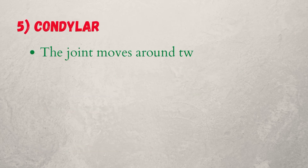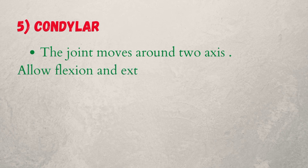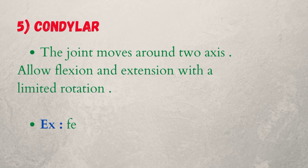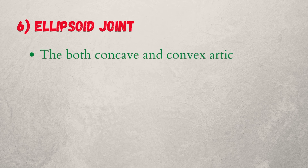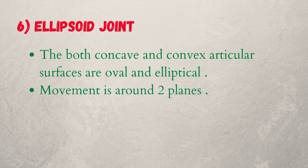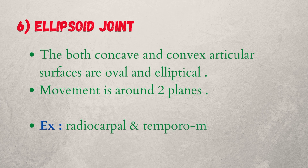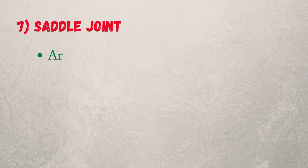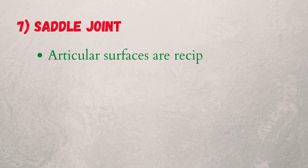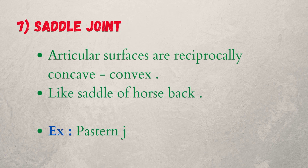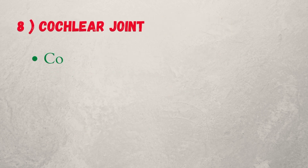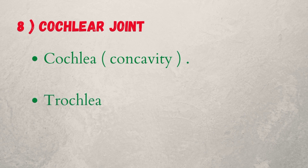Five, condylar joint — the joint moves around two axes, allowing flexion and extension with limited rotation. Example: femorotibial joint. Six, ellipsoid joint — both concave and convex articular surfaces are oval and elliptical; movement is around two planes. Example: radiocarpal and temporomandibular joint. Seven, saddle joint — articular surfaces are reciprocally concave and convex, like a saddle on horseback. Example: pastern joint. Eight, cochlear joint — characterized by concavity and trochlear ridges. Example: tibiotarsal joint.